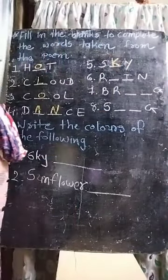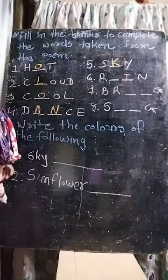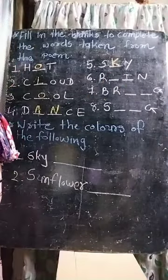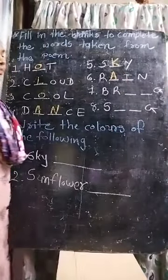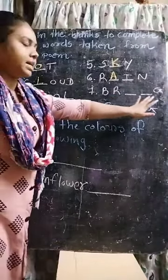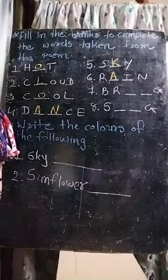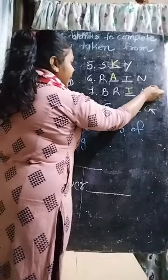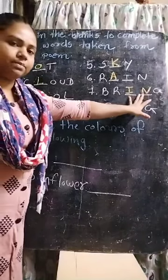Now sixth one: R_D_I_N. Which word is this? Which letter will come here? Rain. R-A-I-N. Rain. Now seventh one: V_R_D_D_G. Which letters will come here? B-R-I-N-G. Bring. Bring - यानि लाना. Clouds क्या लाता है? Rain लाता है. Bring.